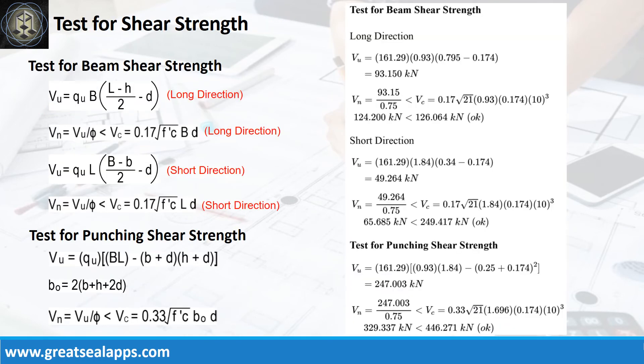The factored beam shear force at long direction is 93.15kN. The nominal force is 124.2kN, less than 126.064kN concrete capacity. The factored beam shear force at short direction is 49.264kN. The nominal force is 65.685kN.